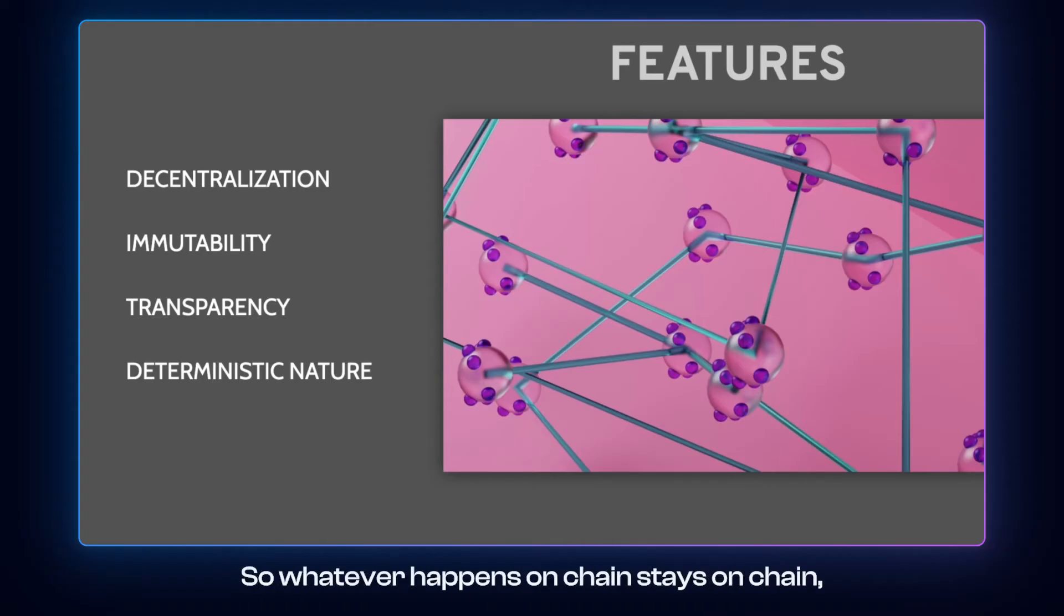So whatever happens on chain stays on chain. Whatever data was once processed by a smart contract can be accounted for and traced back. And this is what creates the data consistency, which allows for solutions like chain supply management to be based on smart contract ecosystem.